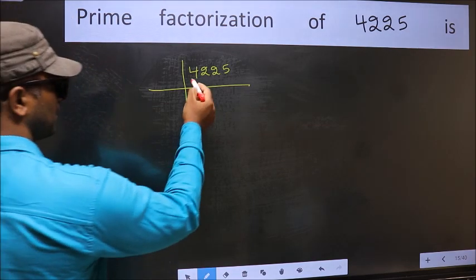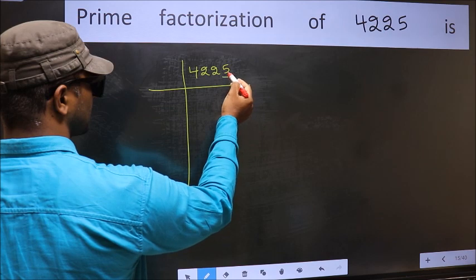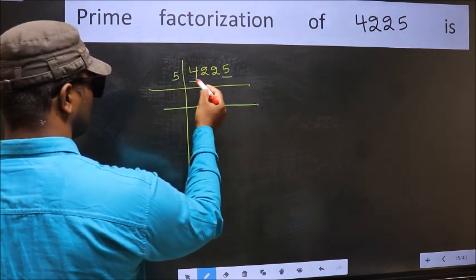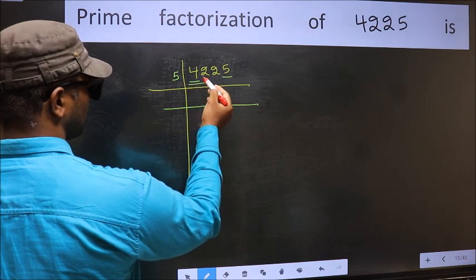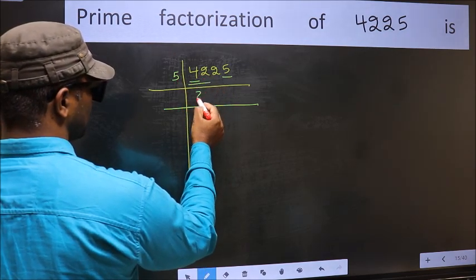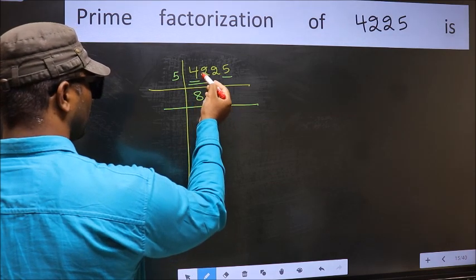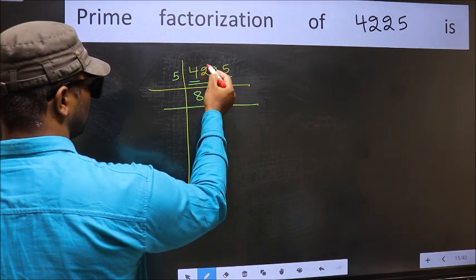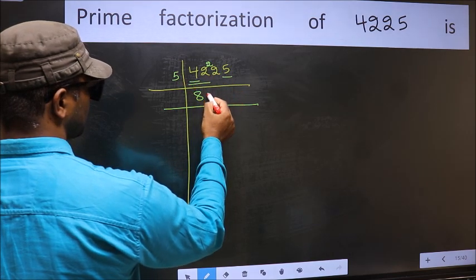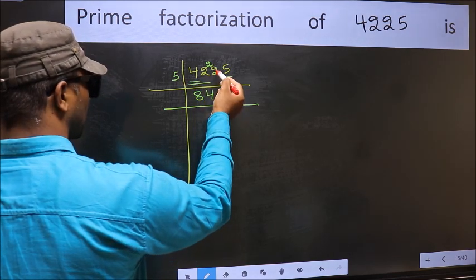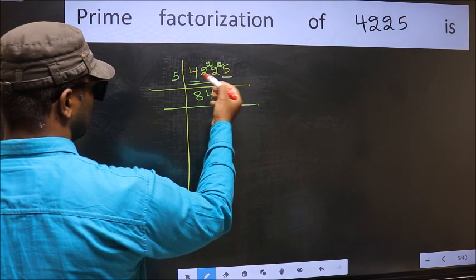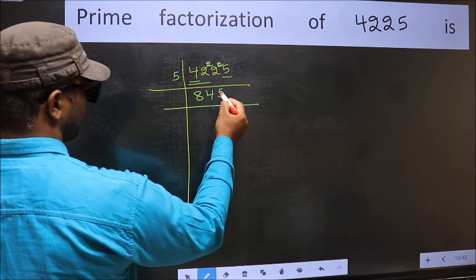In this number, the last digit is 5, so take 5. First number 4 is smaller than 5, so take 2 numbers: 42. A number close to 42 in the 5 table is 5 8s, 40. 42 minus 40, 2 carried forward, 22. A number close to 22 in the 5 table is 5 4s, 20. 22 minus 20, 2 carried forward, 25. When do we get 25 in the 5 table? 5 5s, 25.